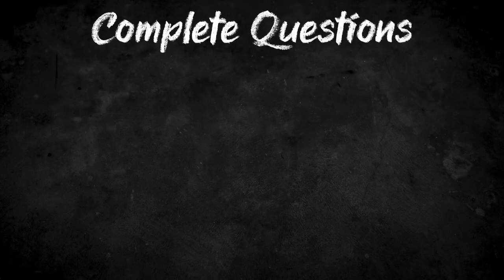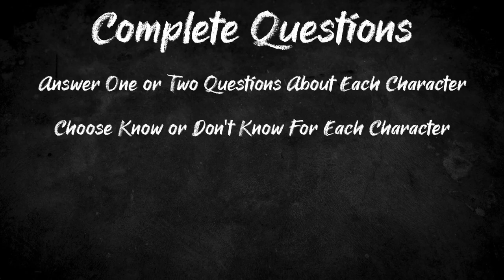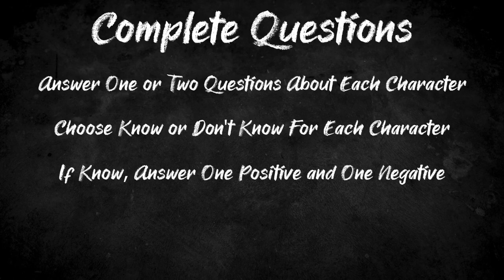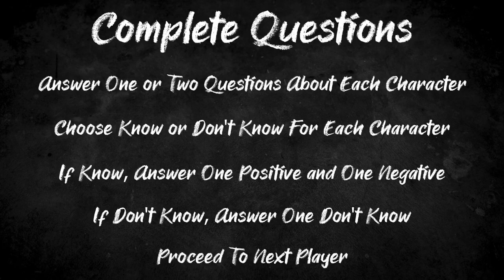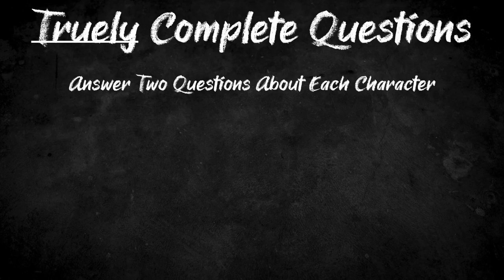The complete questions method has each player answer one or two questions about every other player at the table. Going player by player, they decide if they know that character or not. If they know the character, they answer one positive and one negative question about them. If they don't know the character, they answer just one don't-know question. Play continues around the table with every player going through this same step for every single other character, resulting in everyone having answered one or two questions about every other player. This is a very nice method.